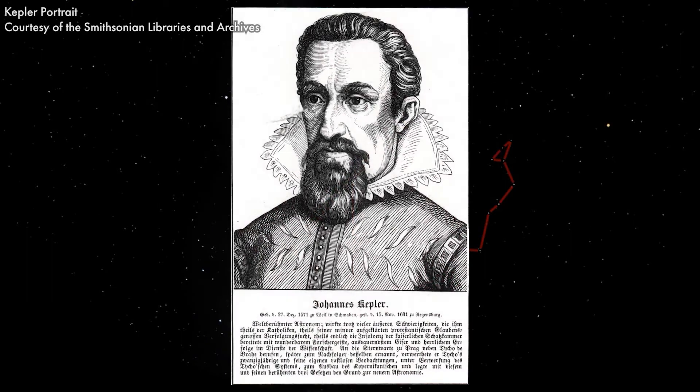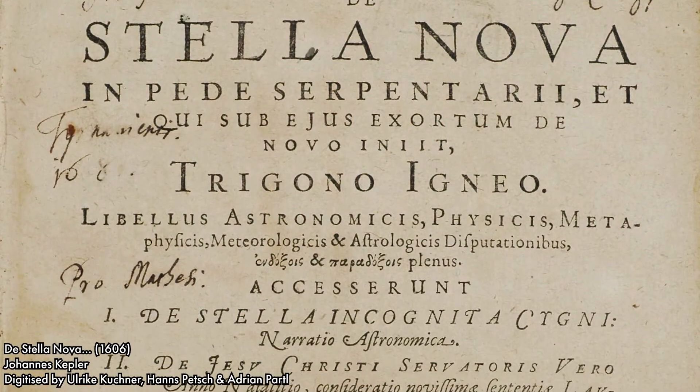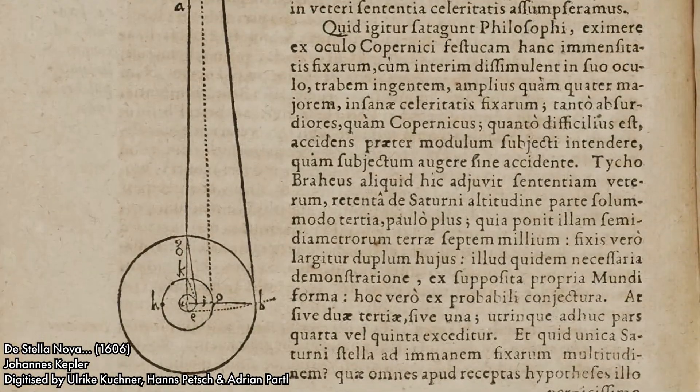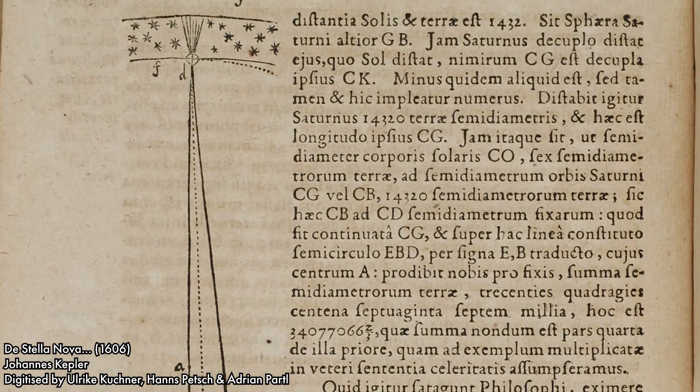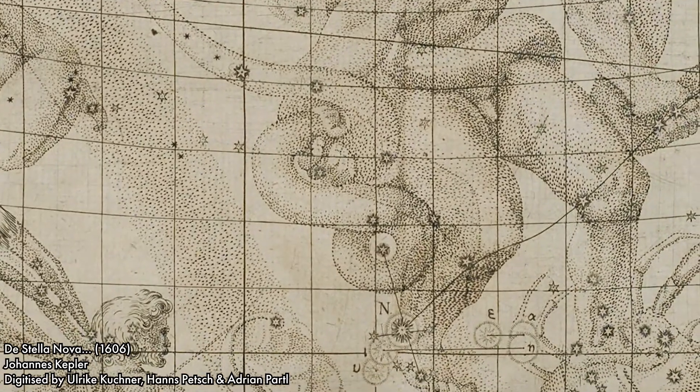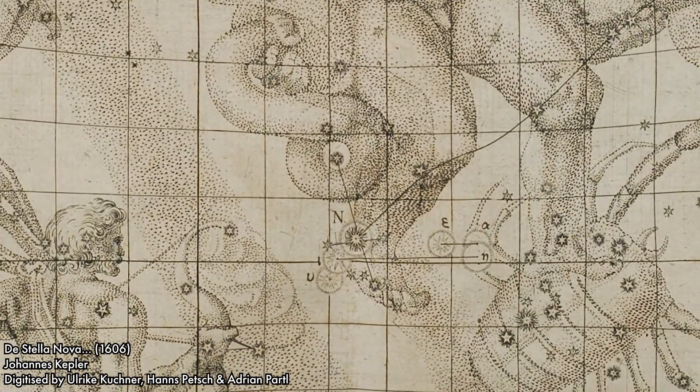Johannes Kepler spent two years studying the sudden phenomenon, culminating in his work De Stella Nova on the new star. In his time, Kepler was able to establish that the bright phenomenon took place beyond the solar system and among the stars. This spelled doom for the classical belief that the stars remained fixed and unchanging in the firmament.